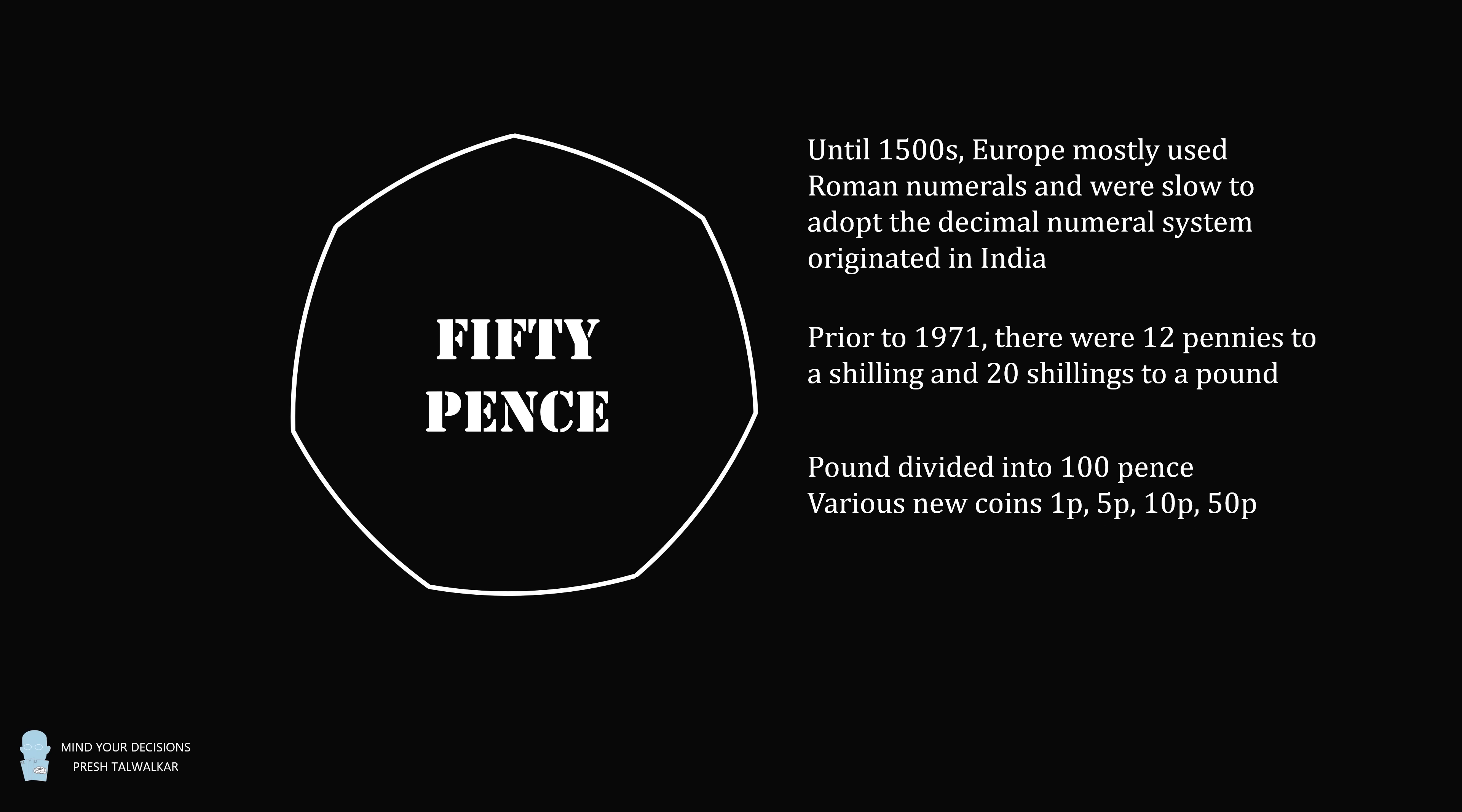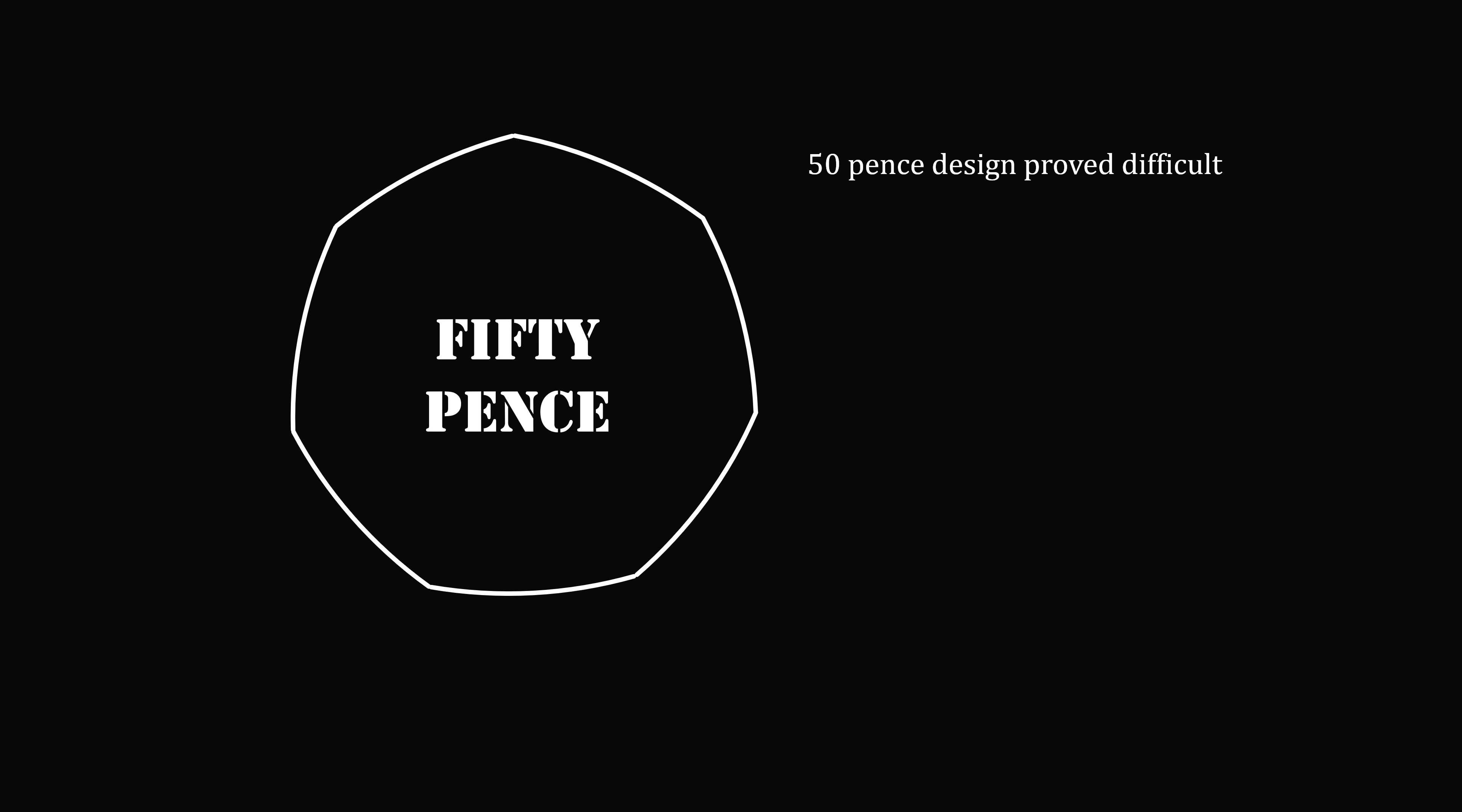After decimalization, the pound was divided into 100 pence, and that meant new coins such as the 1 pence, 5 pence, 10 pence, and 50 pence coin. But the 50 pence design proved difficult. It needed to be identifiable by touch, sight, size, weight, and it must roll smoothly because many things such as parking meters and vending machines required coins that rolled.